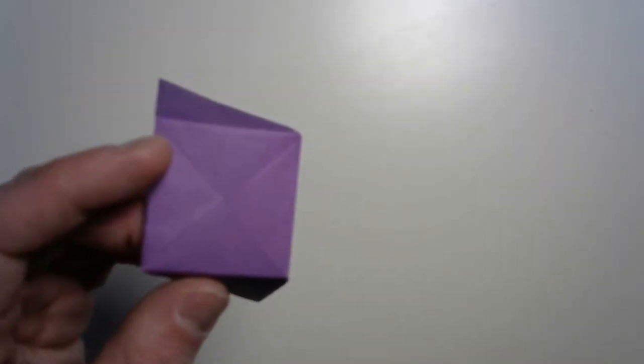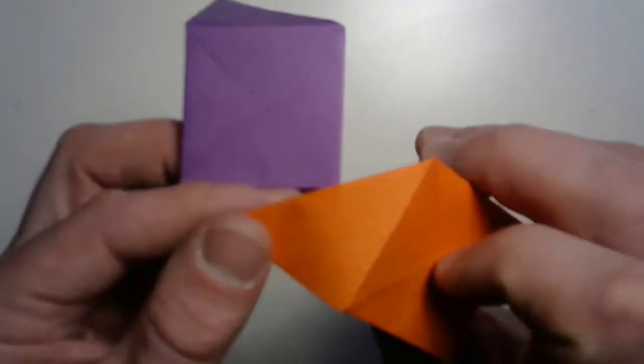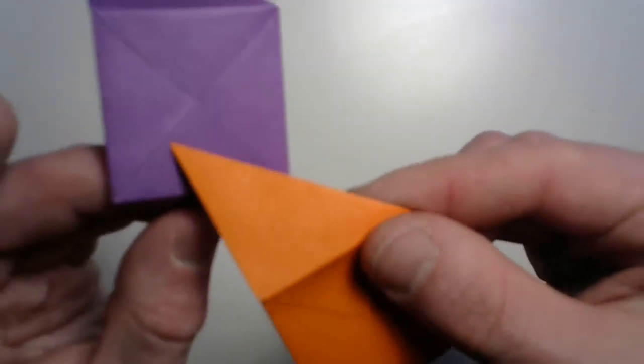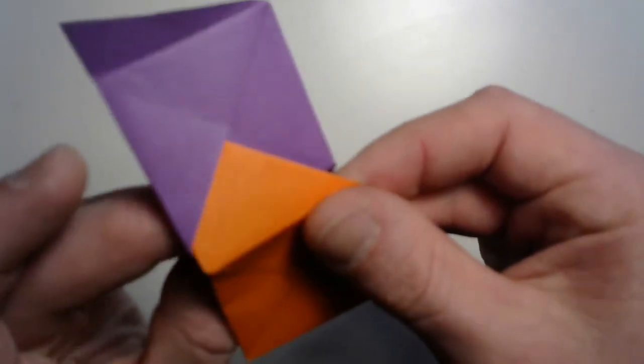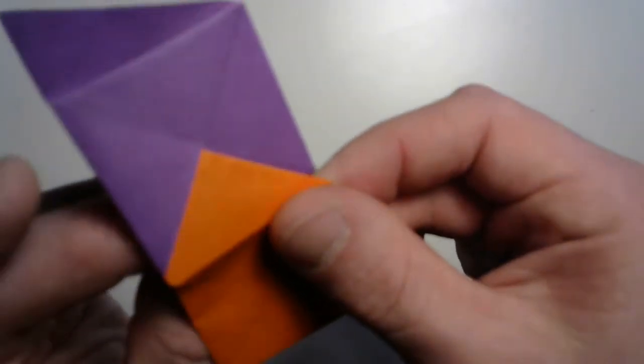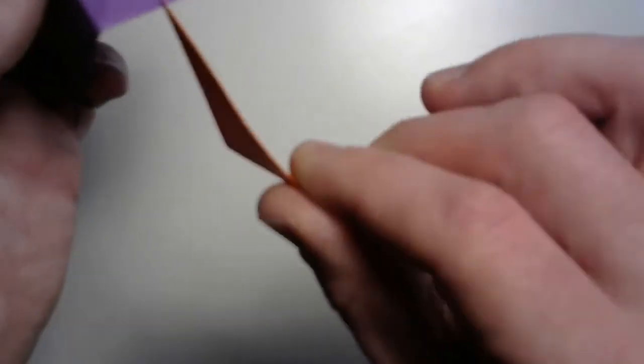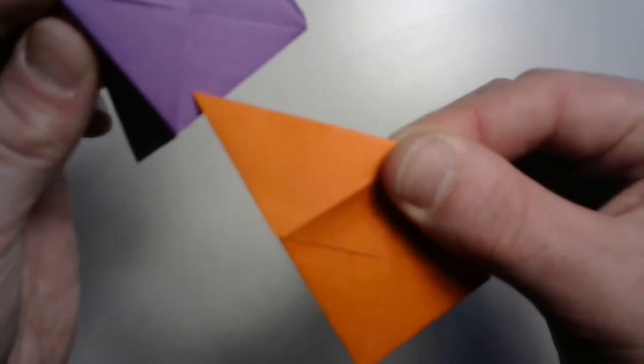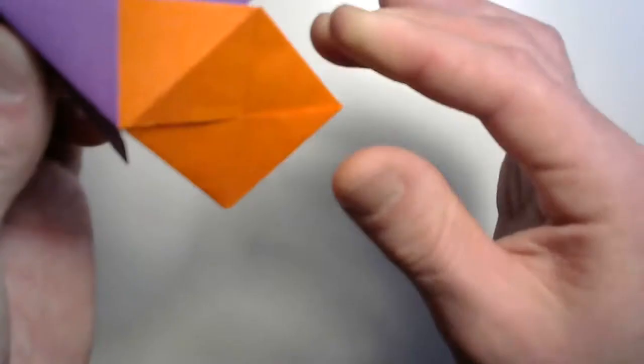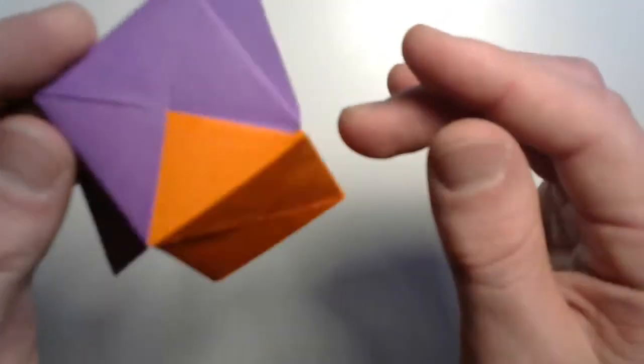Now what we do is we take another Sonobe unit and you'll see that triangle can actually fit right into that pocket. Like that. We're going to actually use the one right here. Make sure you're using the one that doesn't have one of these pieces sticking out. Just like that. Check that out.